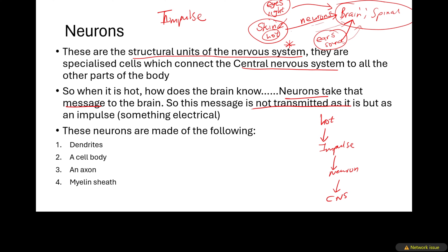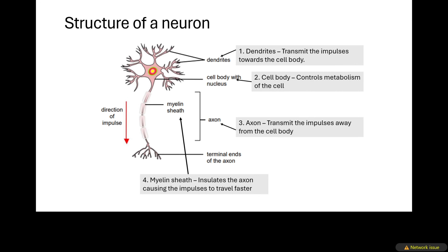So neurons are the structural units of the nervous system — the basic building blocks. The reason the nervous system exists is because of these neurons, because they are the ones transmitting messages based on the stimuli happening in the outer environment. Neurons are made up of four parts: the dendrites, the cell body, the axon, and the myelin sheath.